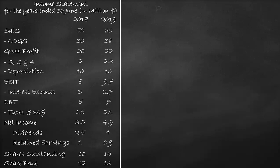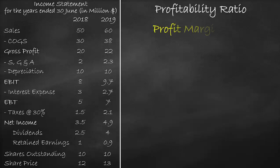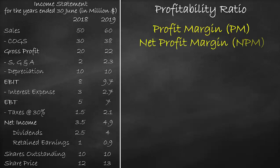An example of a profitability ratio is the profit margin. Profit margin, or net profit margin, is the British terminology, whilst the American terminology is the return on sales.